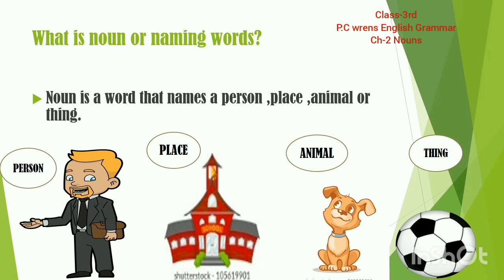The third one — as you can see, it is a dog. Dog is an animal, and the name of an animal is also called a noun. In the fourth picture, it is a football — yeh ek cheez ka naam hai, it is the name of a thing. So, the name of a thing is also called a noun. Let's repeat the definition of noun or naming words again.